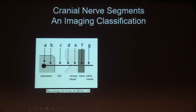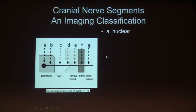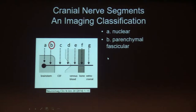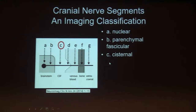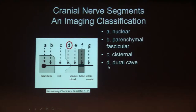We start with the A or nuclear segment, where the cranial nerve nuclei are in the brainstem. We have the B or parenchymal fascicular segment, where the nerve fibers extend toward the surface of the brainstem but have not yet left it. Then we have the C or cisternal segment, where the cranial nerves are surrounded by cerebral spinal fluid in the subarachnoid space.